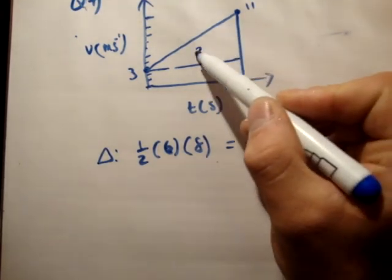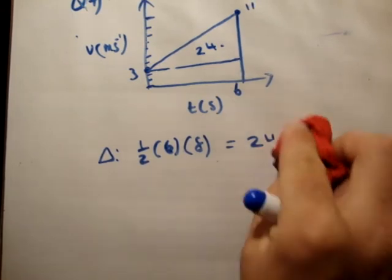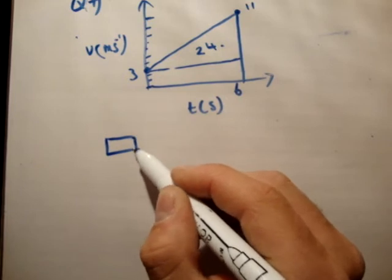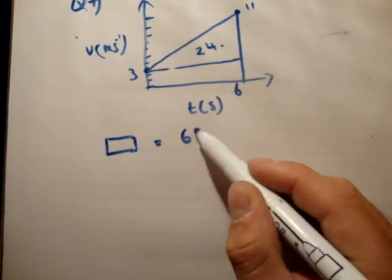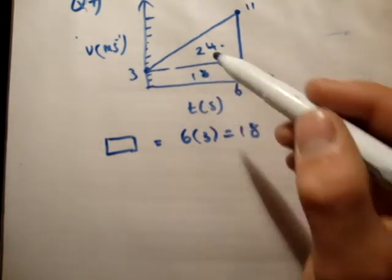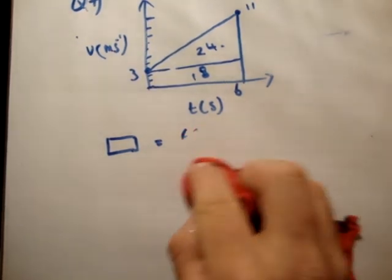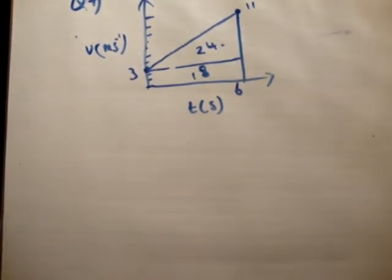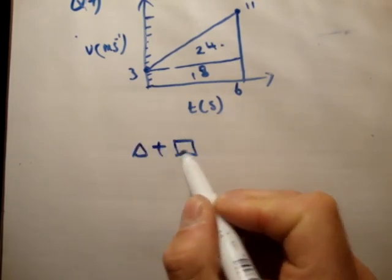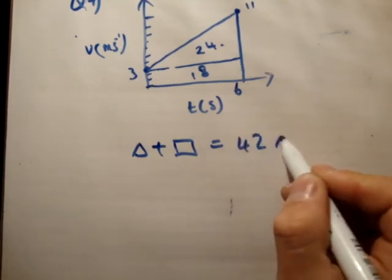Okay, so the area here is 24. And the area of the rectangle is equal to the base by the height, 6 times 3, is equal to 18. So the total area is equal to the triangle plus the rectangle is equal to 42 meters.